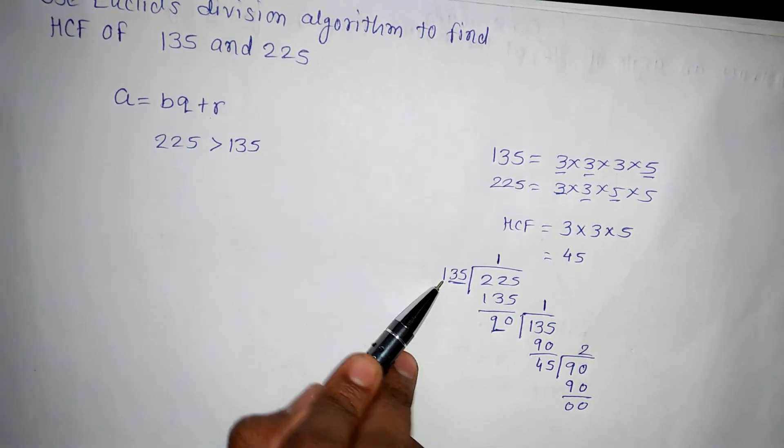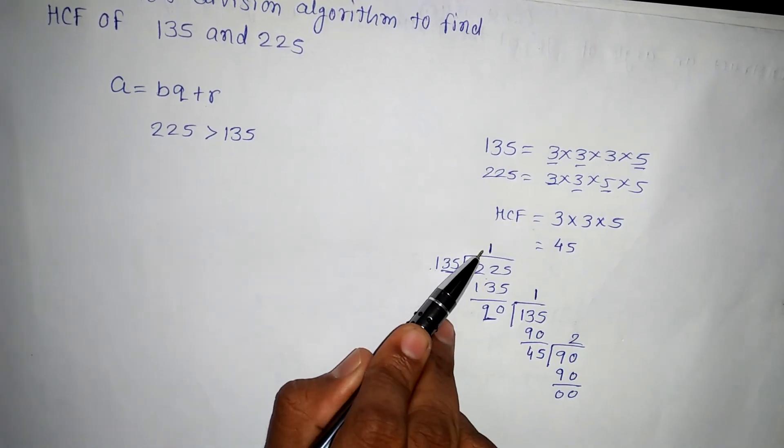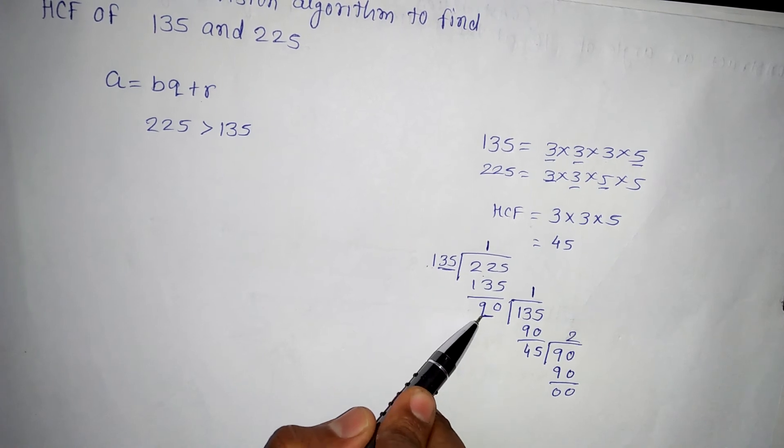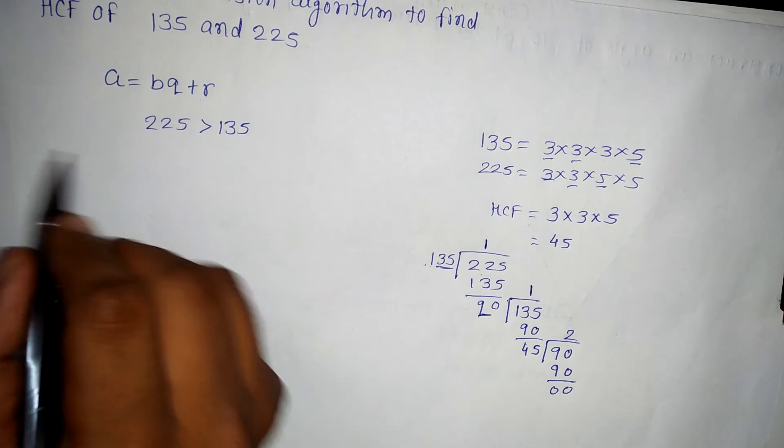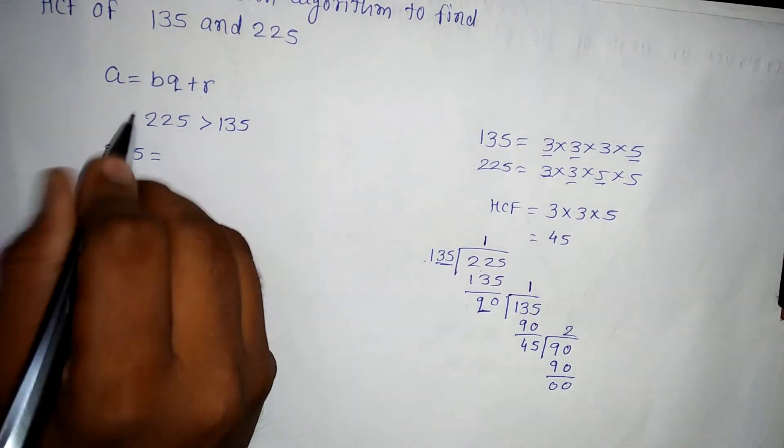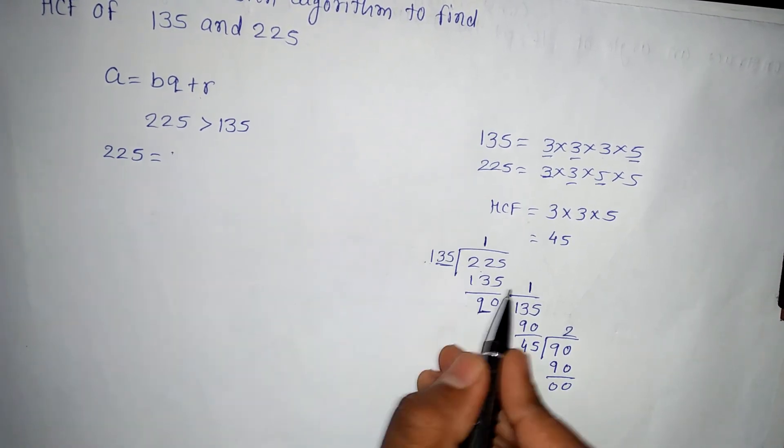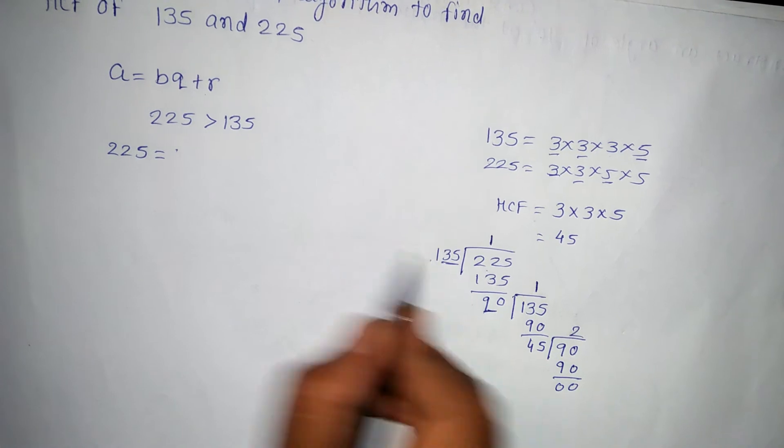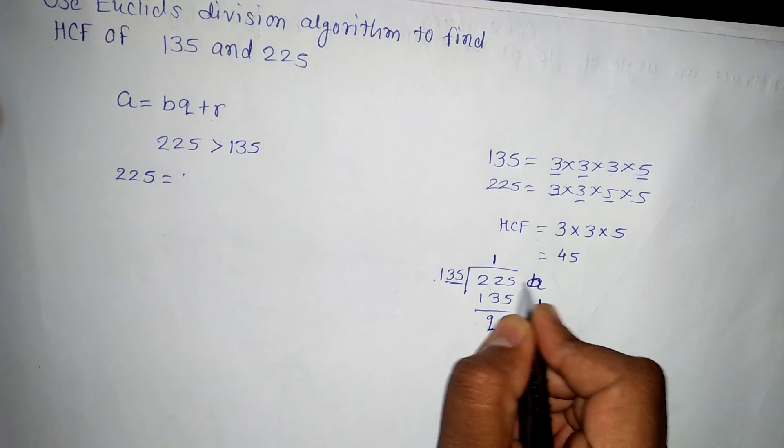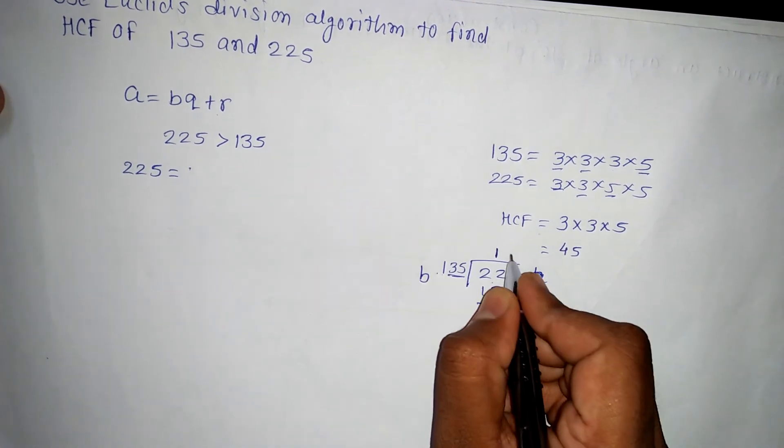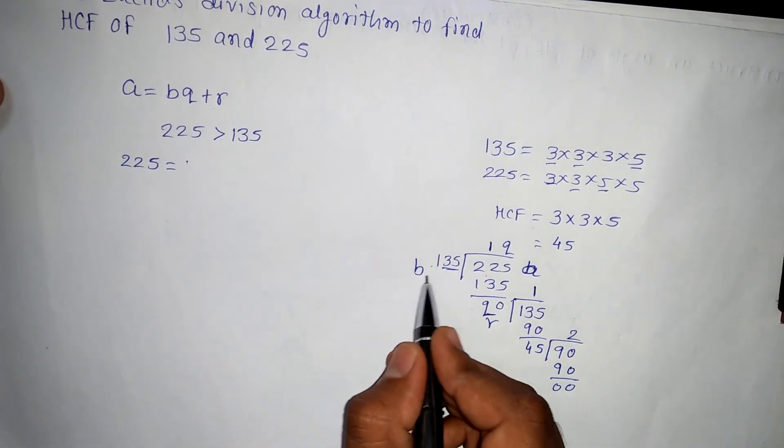That is 135 is a divisor, 225 is a dividend, 1 is quotient, and this 90 is remainder. So I will write it here. That is 225 should be written like dividend. Sorry, 225 is itself a dividend, 135 is a divisor. So B, that is, we know that B, A would be divided by B. We got Q and remainder R.